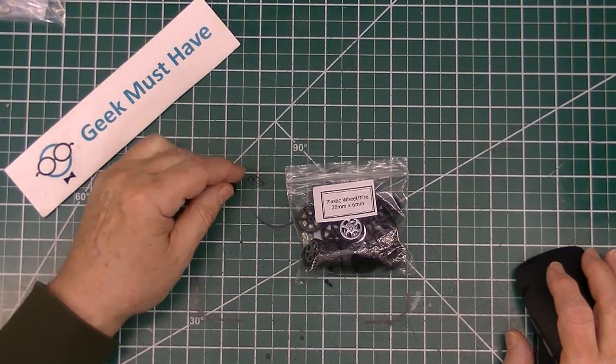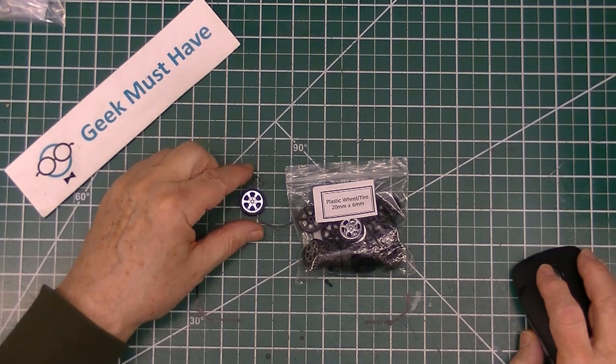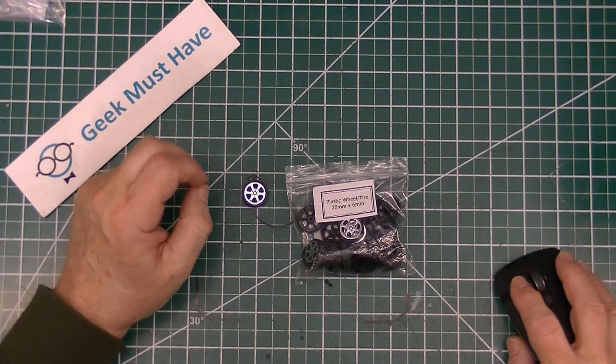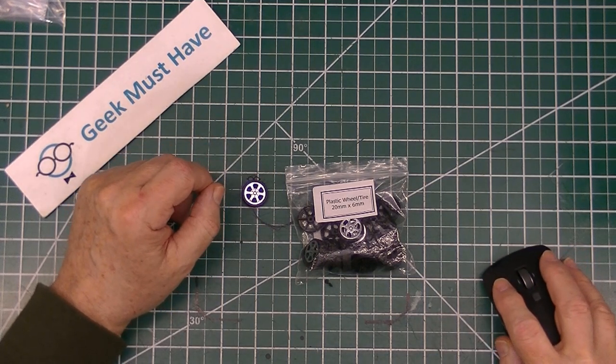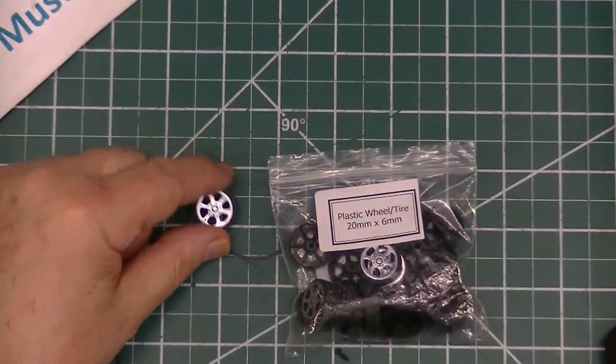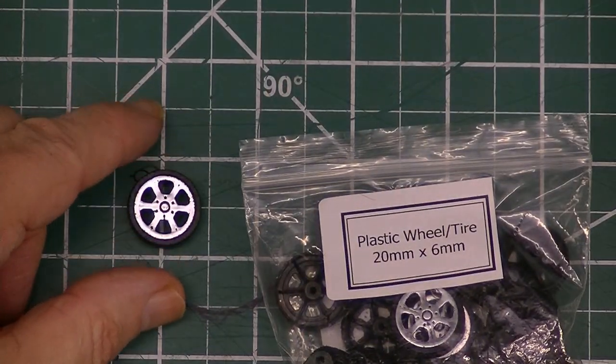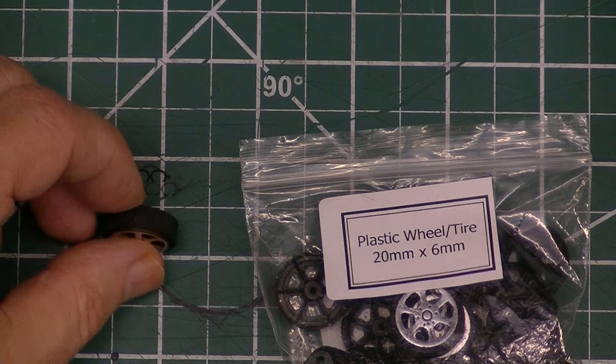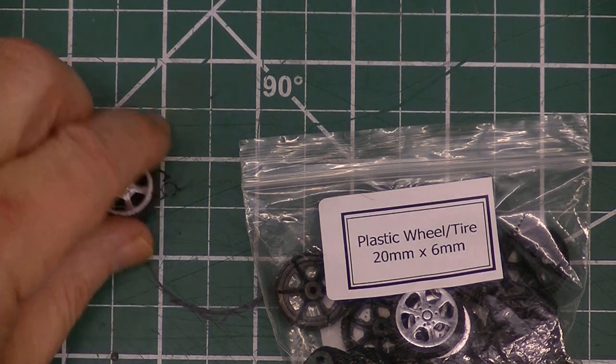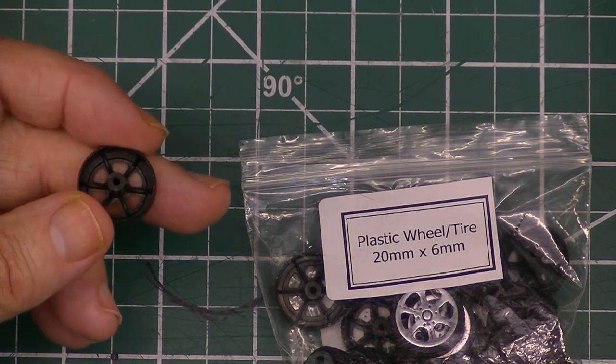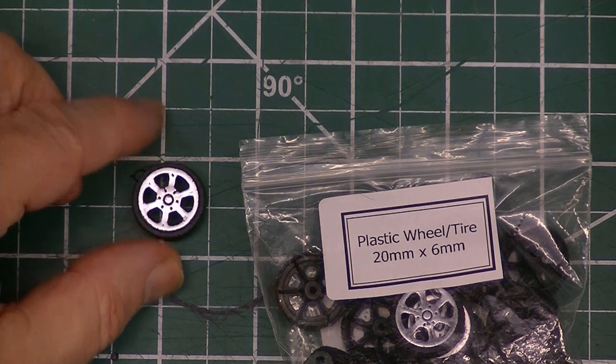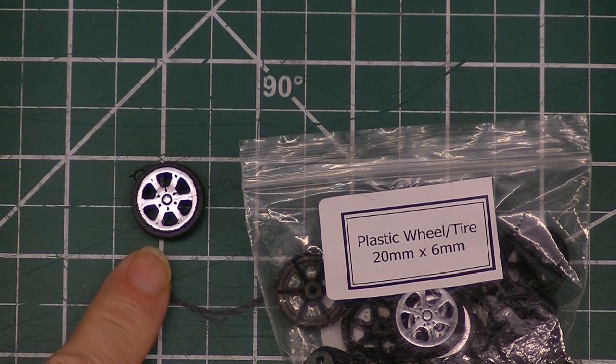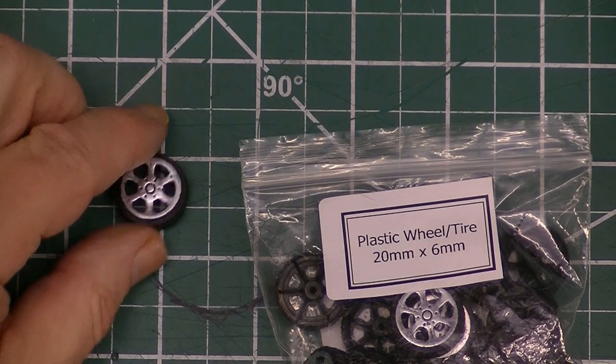This next item is a set of these plastic wheel tire combinations, and these are the real cheap ones. They're 20 millimeters in diameter, 6 millimeters across, and have like a 1.5 millimeter shaft on the outside of them. And while they're made to look like rubber, they're entirely made out of plastic.